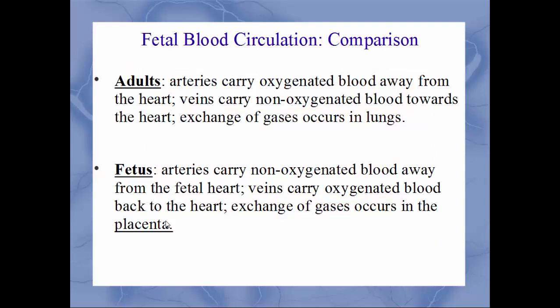Here's a comparison between blood in the adult and the fetus. For adults: arteries carry oxygenated blood away from the heart (except for pulmonary vessels), veins carry non-oxygenated blood toward the heart, and gas exchange occurs in the alveoli of the lungs. For fetuses: arteries carry non-oxygenated blood away from the fetal heart, veins carry oxygenated blood toward the fetal heart, and gas exchange occurs within the placenta — not in the lungs.